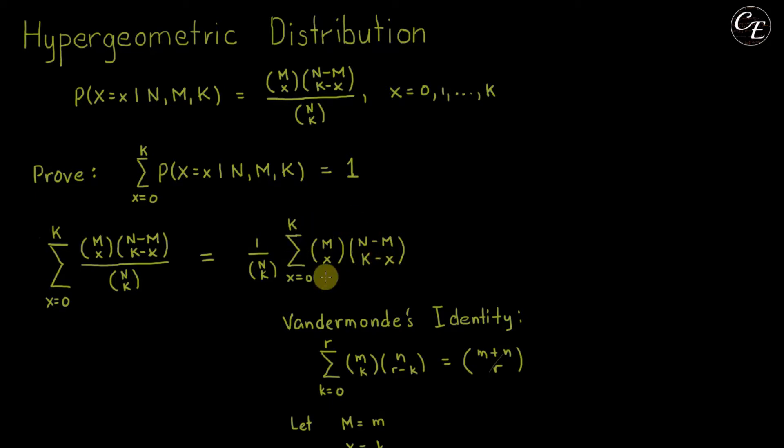We can simplify this. We can remove this summation by the use of the Vandermonde's identity as shown below. Vandermonde's identity states that summation of m choose k times n choose r minus k from k equal to 0 until r is equal to m plus n choose r.